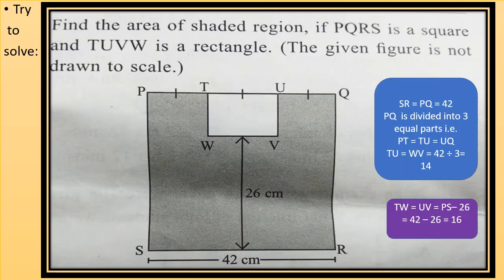Find the area of shaded region if PQRS is square and TUVW is a rectangle. Look at the figure. PQRS is square. That means all the sides PQ, QR, RS and SP are equal and it is given that they are 42 cm.